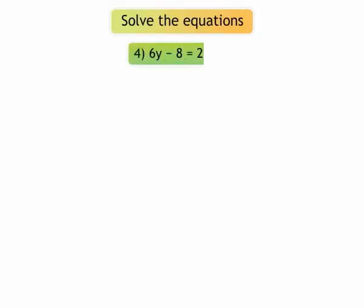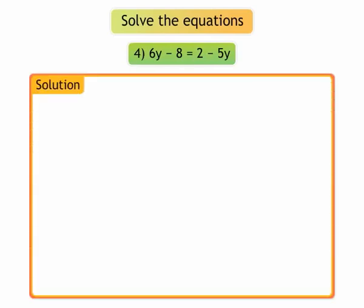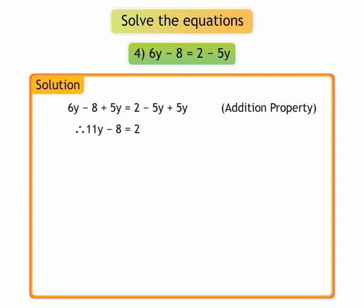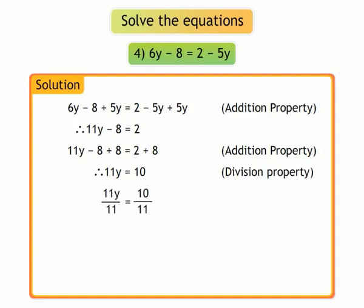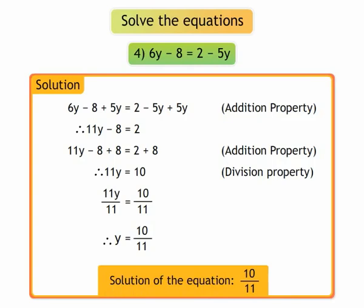4. 6y minus 8 equal to 2 minus 5y. On using the addition property, we get 6y minus 8 plus 5y is equal to 2 minus 5y plus 5y. We get 11y minus 8 is equal to 2. By using addition property, we get 11y minus 8 plus 8 is equal to 2 plus 8. We get 11y is equal to 10. By division property, we get 11y upon 11 is equal to 10 upon 11. We get y is equal to 10 upon 11. The solution to the equation is 10 upon 11.